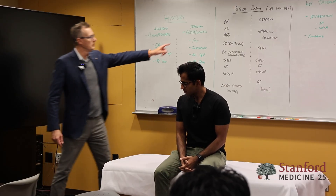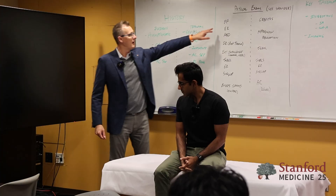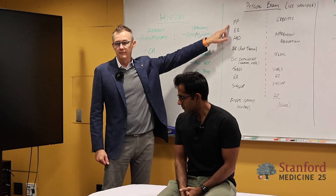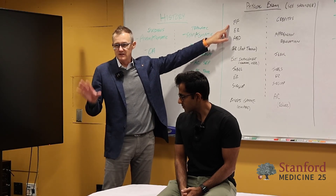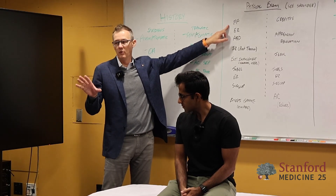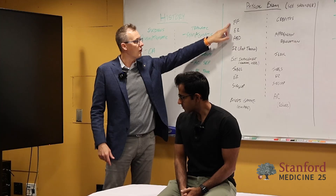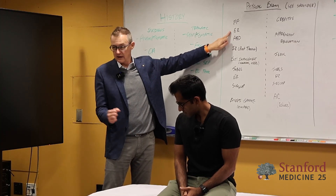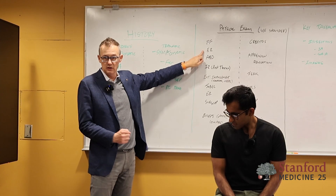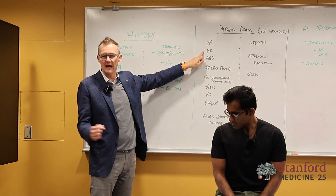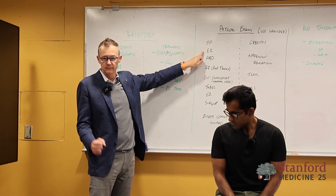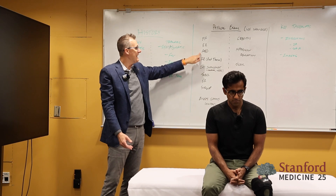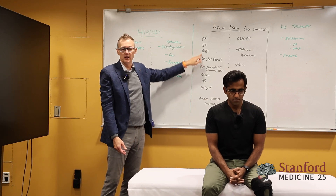FF is forward flexion — these are the simple ones you just should know how to do. Forward flexion, external rotation with the arm at the side, forward flexion this way, abduction.